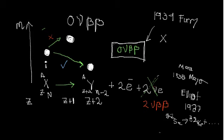Where we have the same process but without emission of neutrinos, only emission of electrons—two electrons.